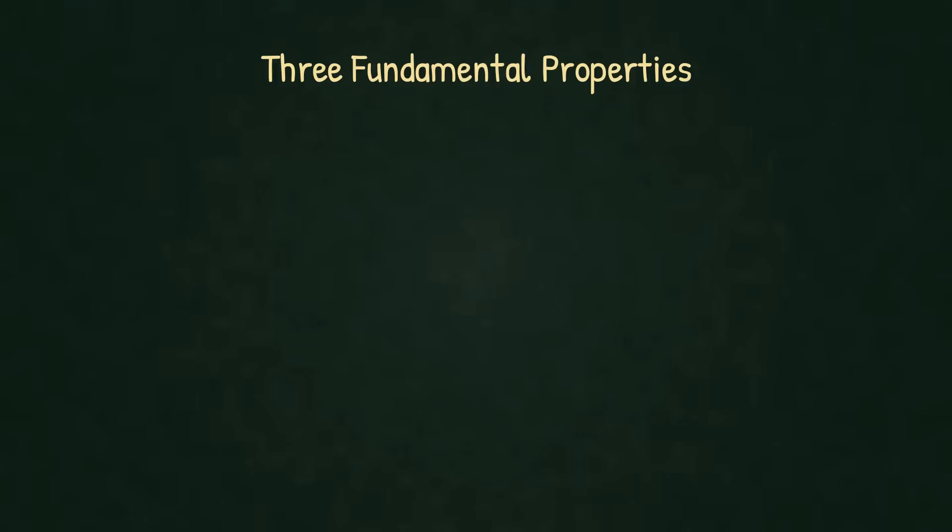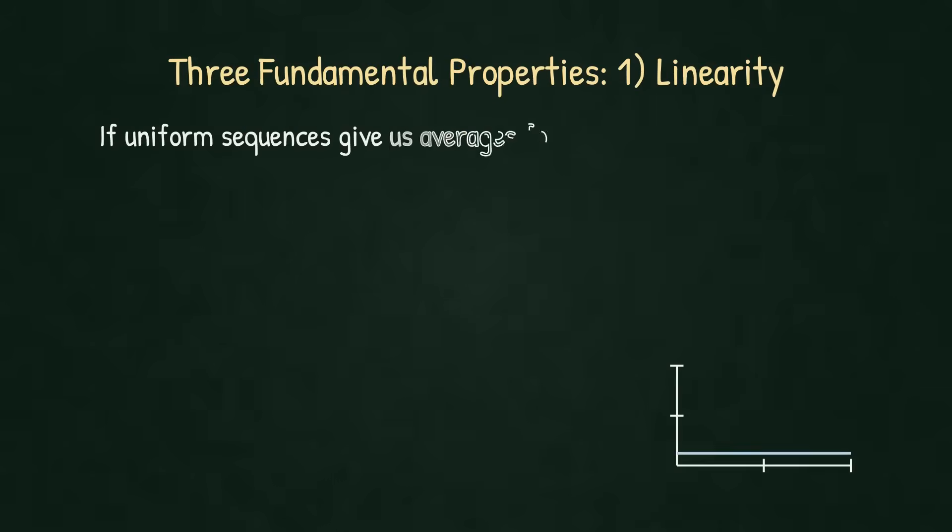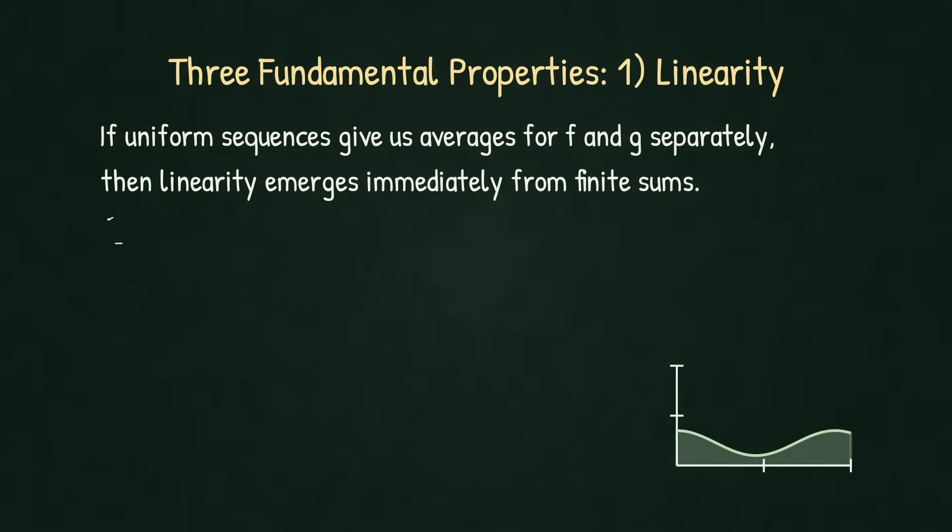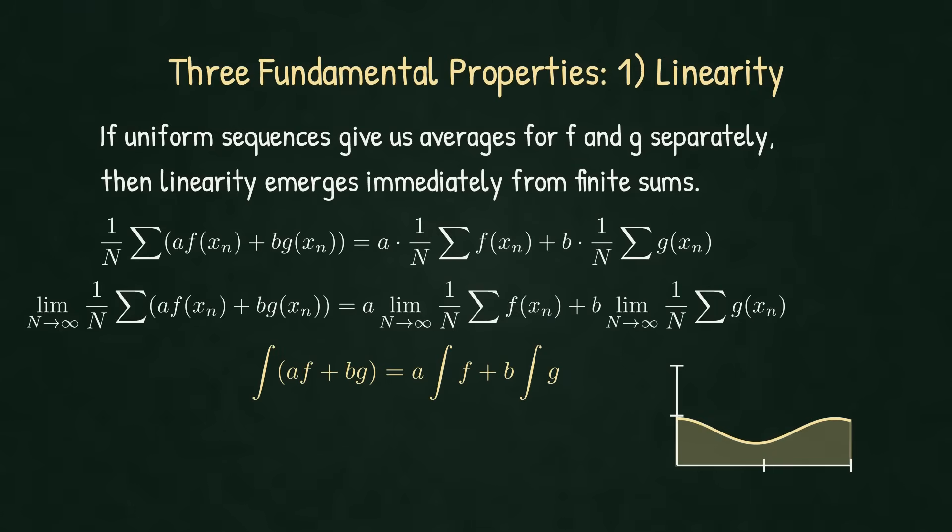So, we've rebuilt the integral as an averaged evaluation over uniformly distributed points. Now watch what that buys us. Linearity is a one-liner. Averages distribute over sums and constants in every finite block. So the limit does too.